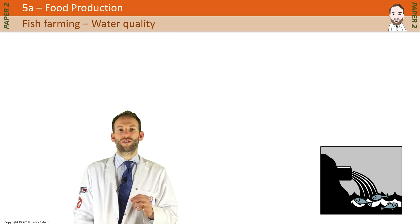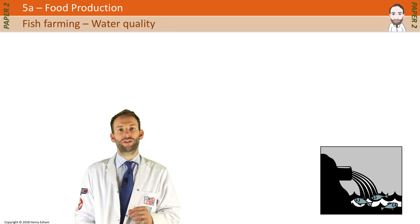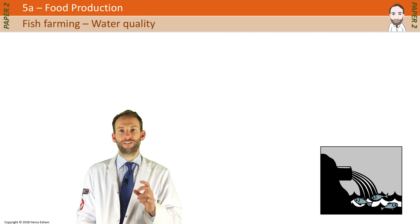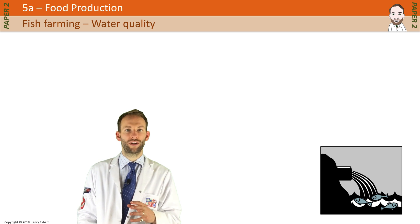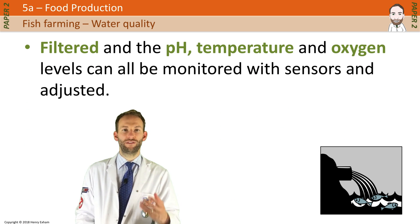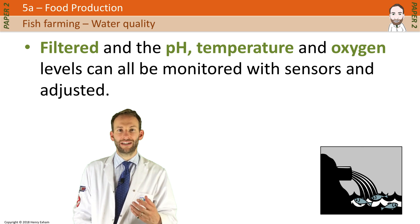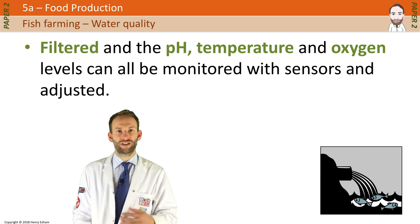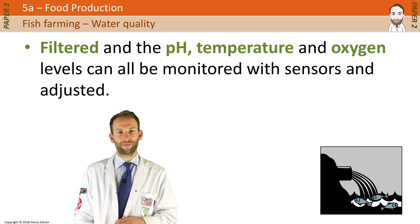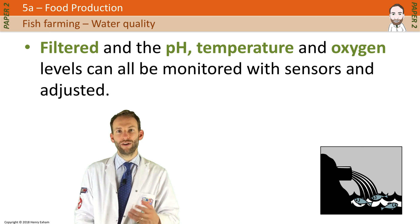You've got to keep the water quality at its optimum at all times. If you're growing fish in a tank, it's very easy to control the water quality. The water in a tank is filtered to remove waste. The pH, temperature and oxygen levels can all be monitored with sensors and adjusted accordingly.